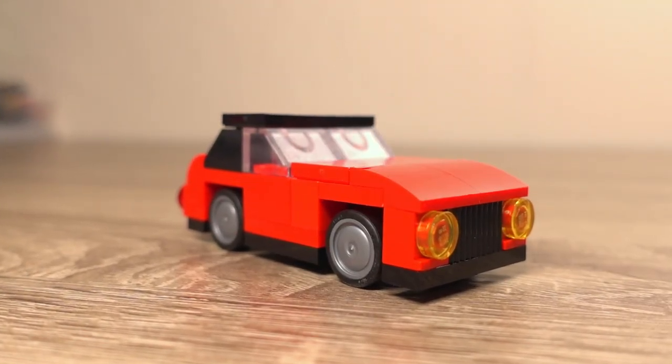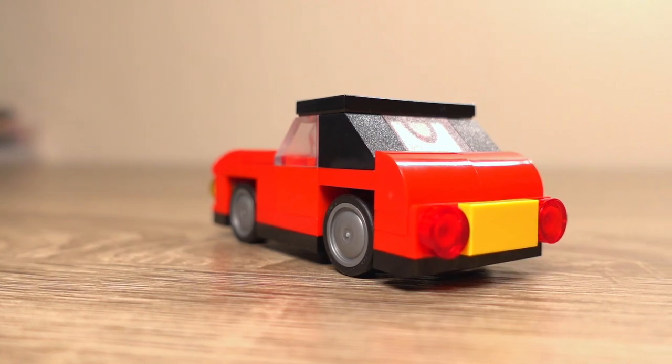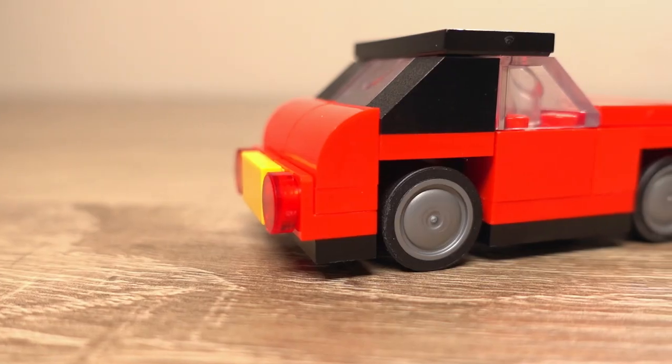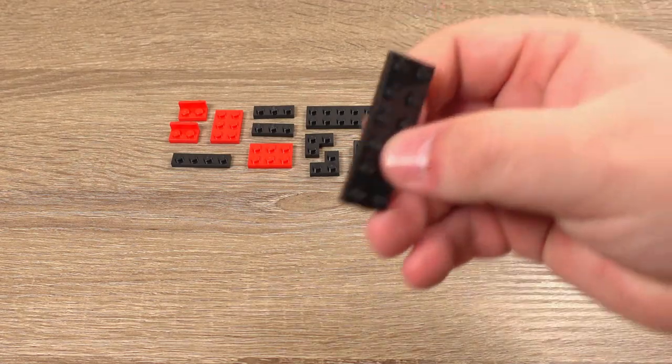Welcome to another mini build video. In this one we're building a vintage sporty convertible car in red. This is another one of my ideas inspired by what I've been watching on TV lately, but without further ado, let's get building.